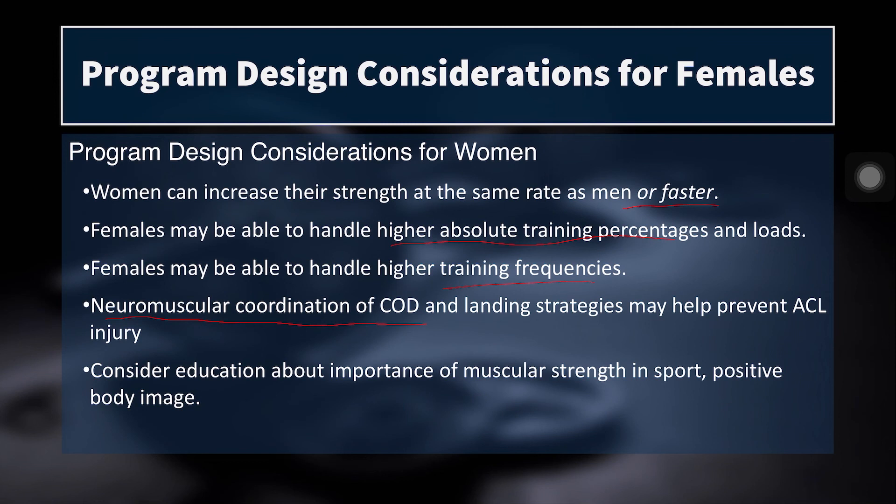That wraps up the sex differences between males and females and some approaches to programming differently for females versus males. We're not done yet with chapter 7 of Essentials of Strength Training and Conditioning — the next video will cover training for older populations, which is a great population to work with. Stay tuned for that video, and if you found value in this please don't forget to subscribe and like.